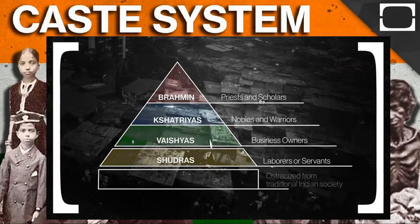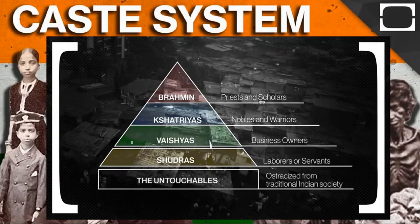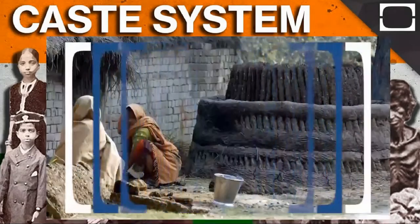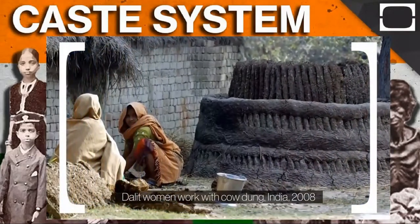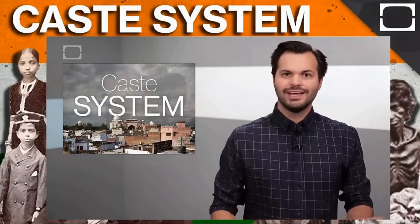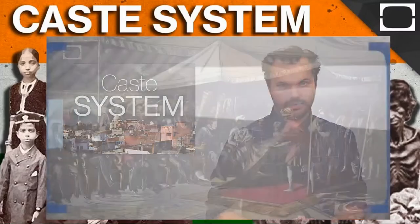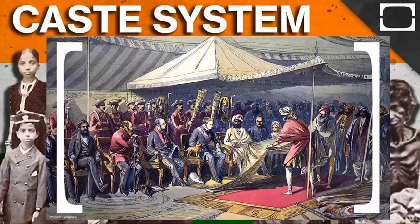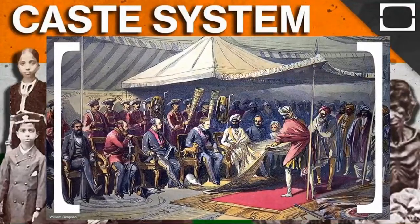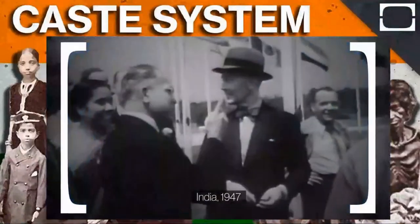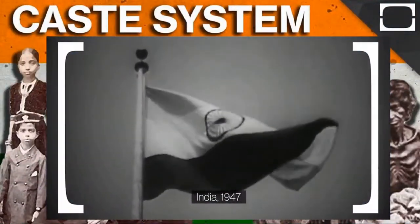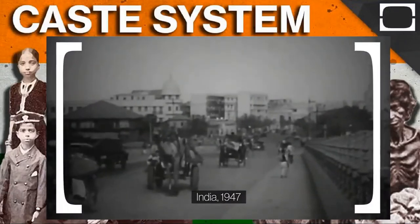There is a fifth group, completely ostracized from traditional Indian society — the Untouchables, now called the Dalits. This is the lowest caste, relegated to undesirable jobs like cleaning sewers. Because they are considered impure, the Dalits have been regularly segregated from schools and religious temples, and there are reports that some have even been punished for letting their shadow fall on someone of a higher caste. Experts think this hierarchy wasn't strictly adhered to until the British claimed India as a colony and wrote the caste system into their laws, making it more rigid. When India gained independence from Britain in 1947, it was ingrained into the culture.